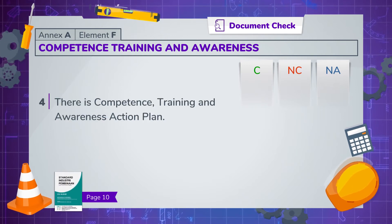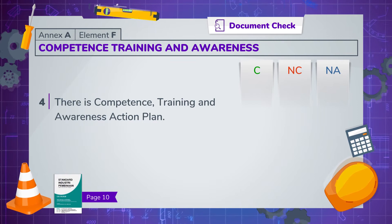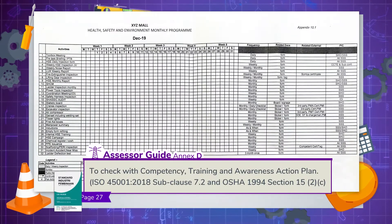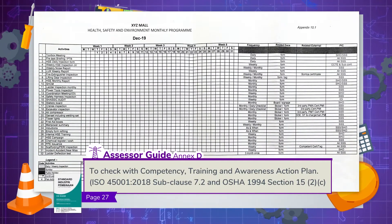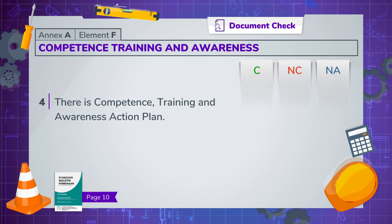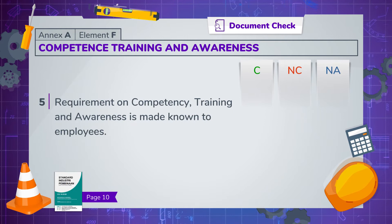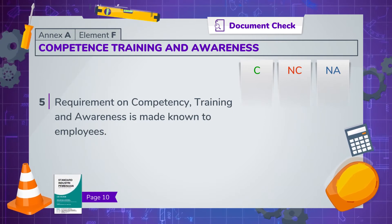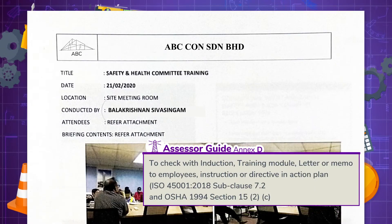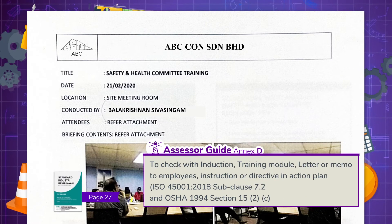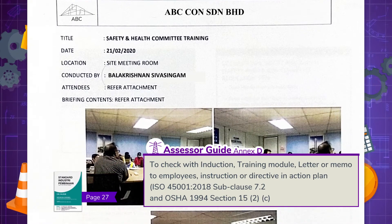Ensure that there is an action plan for competency, training and compliance. The requirements on competencies, training and awareness should have been made known to employees through induction, training, letter, memos or other files of instruction.